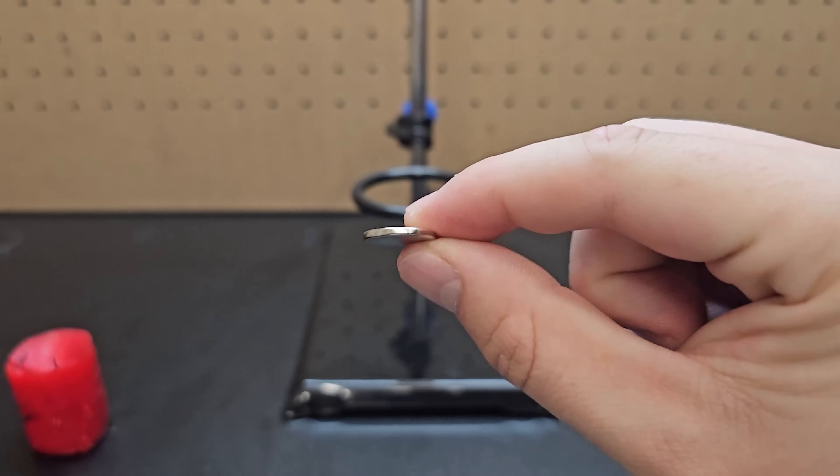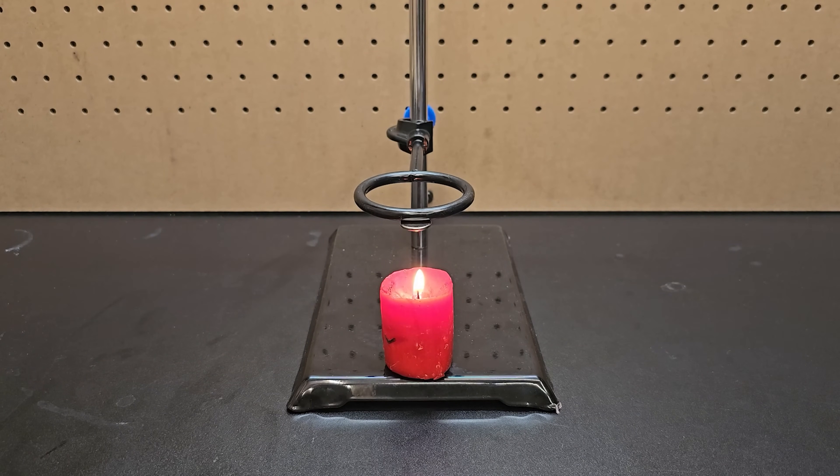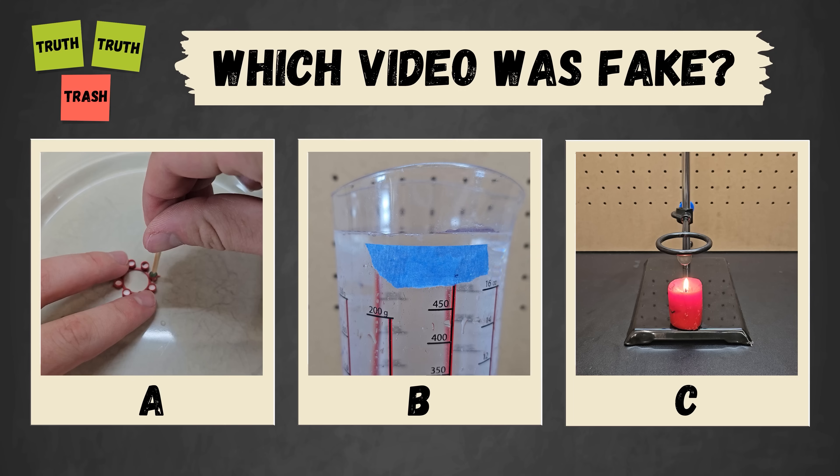If you take a strong neodymium magnet and attach it to a steel surface the magnet will stay, but if you place a candle beneath it and wait a few moments the magnet will weaken and ultimately fall. If you've seen all three videos now, pause to vote in the comments which one you thought was fake.